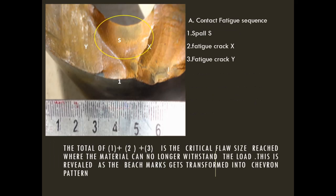This is a case of spalling in a bearing. Here you can see the spalled area, and two fatigue cracks have propagated simultaneously from the origin of the spalled area — crack one and crack two. This is a somewhat rapid failure, and the fatigue crack propagation in this type of failure is very fast.